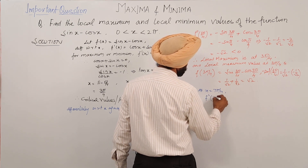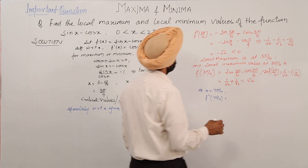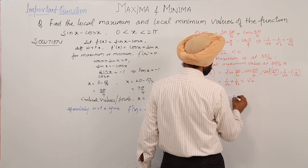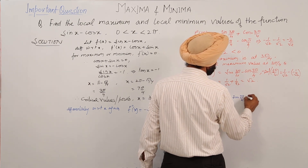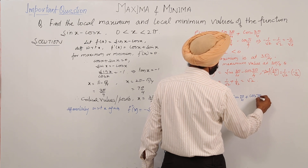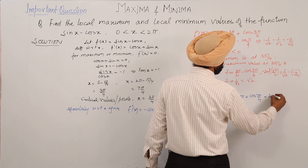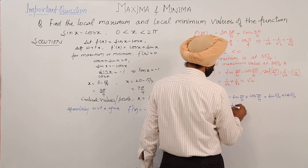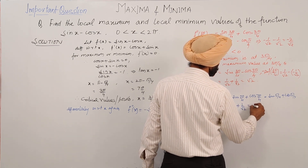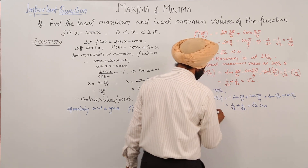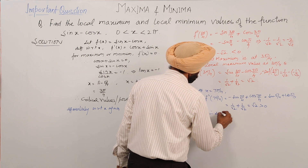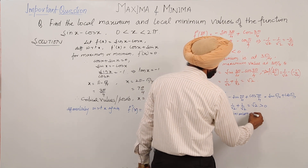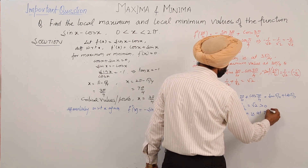For the second critical point, f''(7π/4) = minus sin(7π/4) plus cos(7π/4) = sin(π/4) plus cos(π/4) = 1/√2 + 1/√2 = √2, which is greater than 0. Therefore, there is a local minimum at x = 7π/4.